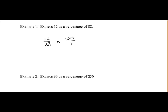Multiply top by top. 12 by 100 is 1200. 88 by 1 is 88. So we divide 88 into 1200 and we get an answer of 13.64%. I've rounded it off to two decimal places which should be sufficient. So 12 is 13.64% of 88.